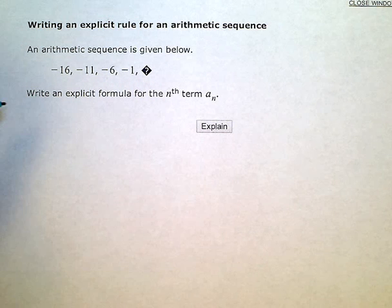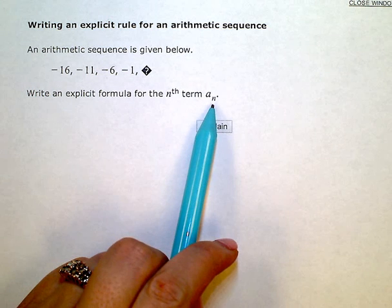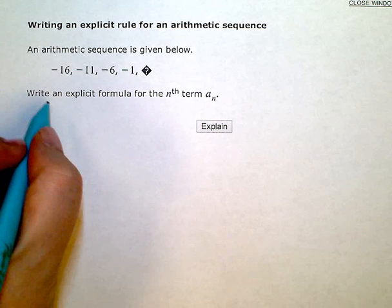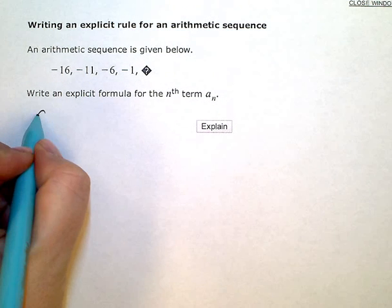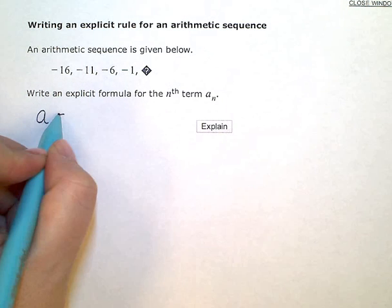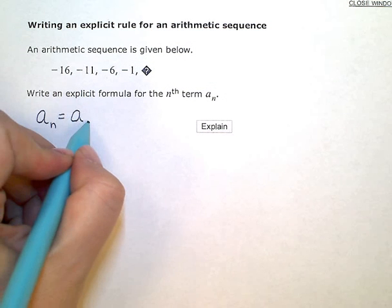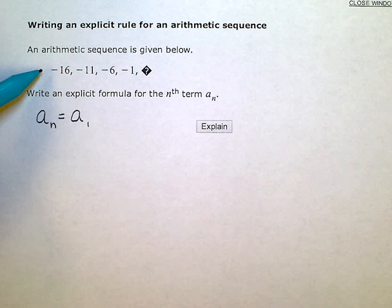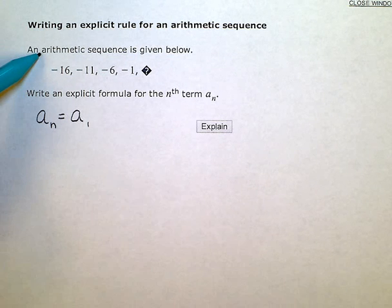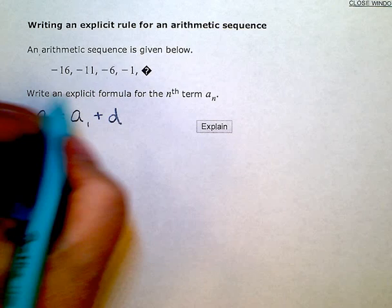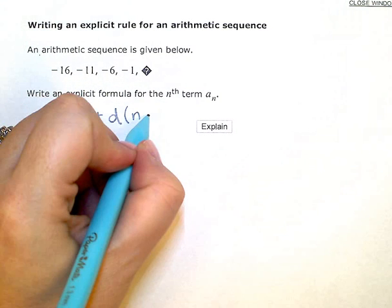I want to write an explicit formula for the nth term or a sub n in sequence notation. So the general form of an explicit formula to find any term a sub n, we need the first term a sub 1. And then we have to figure out if this is, well they tell us it's arithmetic, so that means that we're adding or subtracting our common difference. And we do that n minus 1 times.